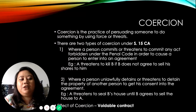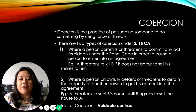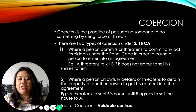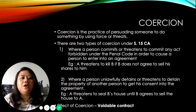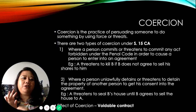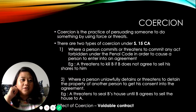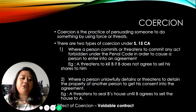The second type of coercion is when a person unlawfully detains or threatens to detain the property of another person to obtain their consent to an agreement. Instead of threatening through a criminal act, this person takes away — for example — your house, not allowing you to enter unless you sign that agreement. Your consent was not given freely. The effect of coercion is a voidable contract.